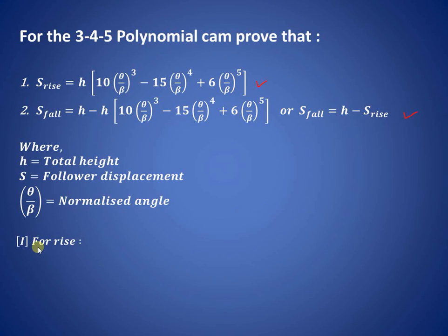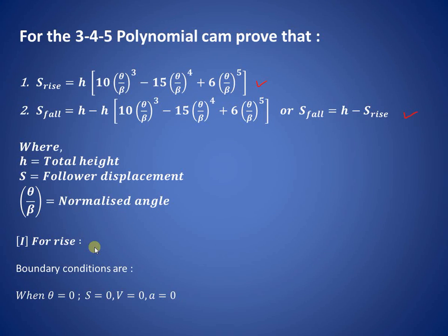Let us understand the boundary conditions for rise motion of the follower and cam. When theta equals 0, displacement is 0, velocity is 0, and acceleration is also 0. At the end of the rise stroke, theta equals beta, displacement equals h (total height), so s equals h. At this position, velocity and acceleration are both 0, meaning the follower has reached its maximum height.